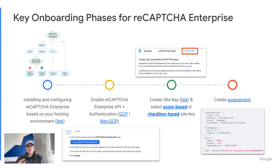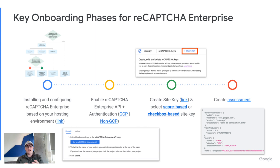We break the onboarding down into four main pillars. The first is simply installing and configuring ReCAPTCHA Enterprise, and that will be based on your hosting environment — there's a link that describes that in more detail. Once you've done that, you'll enable ReCAPTCHA Enterprise as well as the API, and that will also be dependent on whether or not you are running it on the GCP side. Again, there's a documentation hyperlink there.